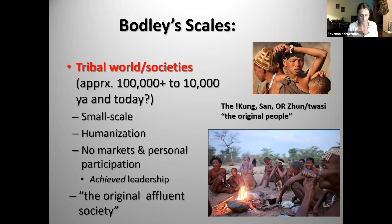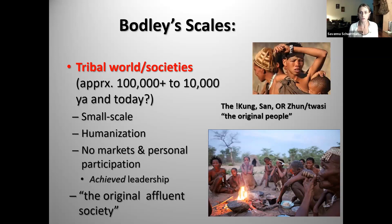Their subsistence is hunting and gathering — wild resources available in their environment. The main driving force in this type of society is humanization: meeting everyone's basic needs — food, water, reproduction. The driving force shaping how they organize, how they make decisions, how big they let the population get, is this concern with making sure people's needs are met. Humanization is the goal — that's what shapes all else.